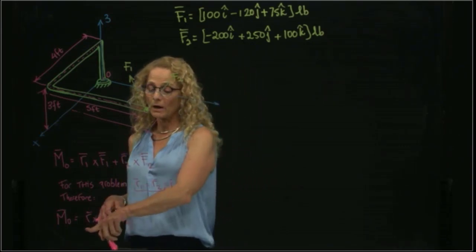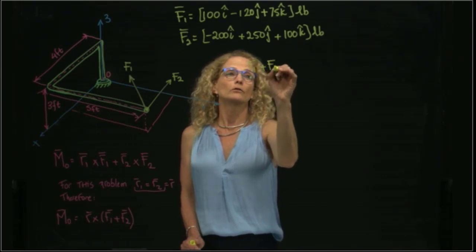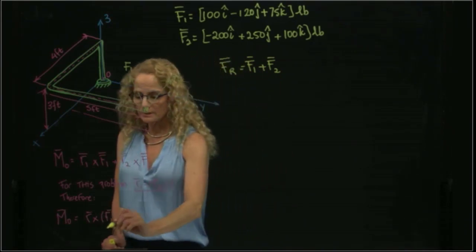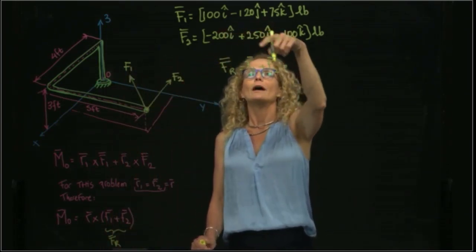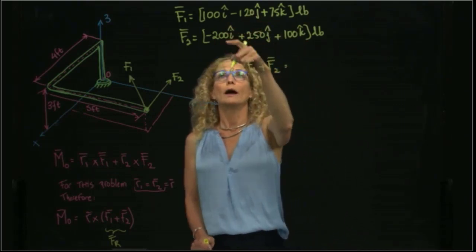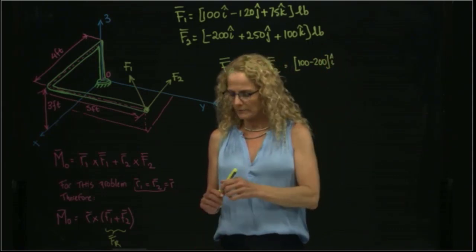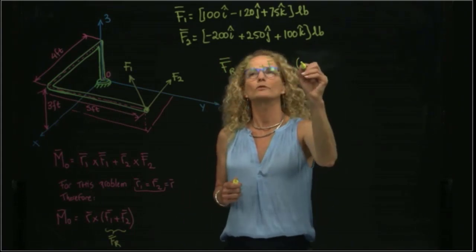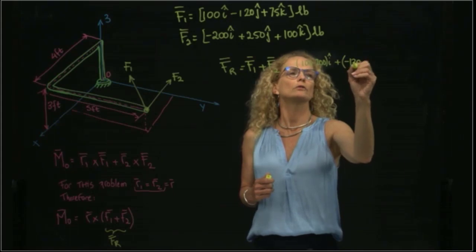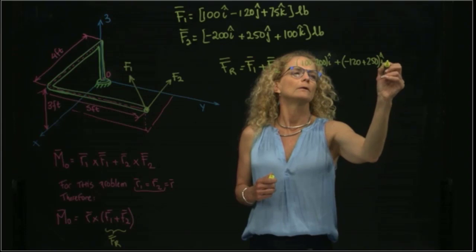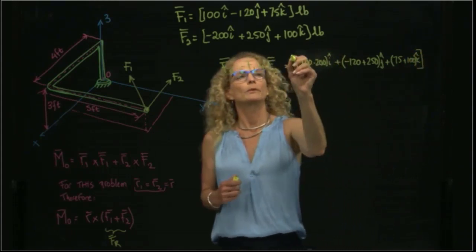Since R is the same, let's find R and let's find F1 and F2. We already have F1 and F2, so F1 plus F2, which is the resultant force. When I add two forces, I add the components. So I will add 100 minus 200 in I. I'll use parentheses and brackets for the units. Minus 200 in I, and then I have negative 120 plus 250 in J.